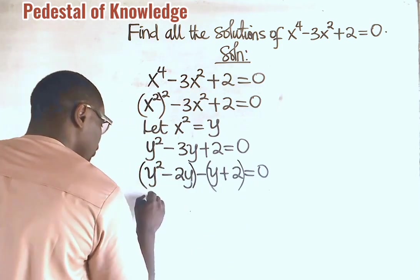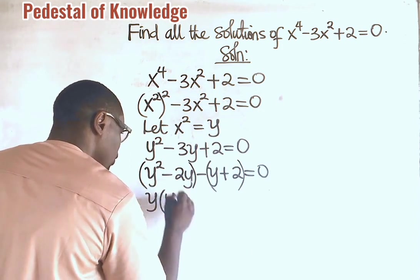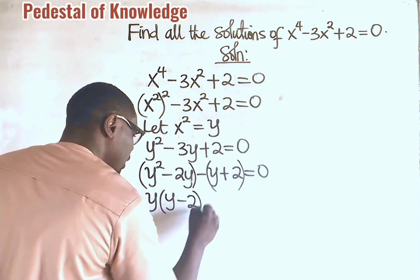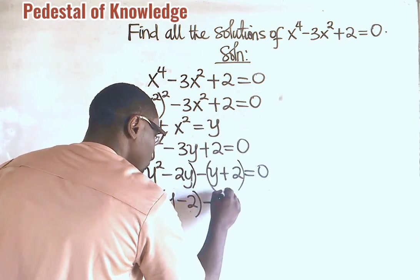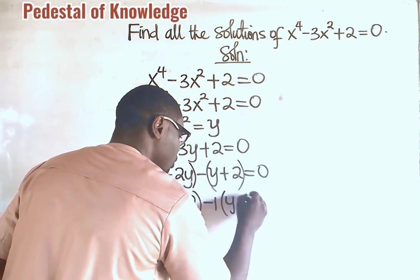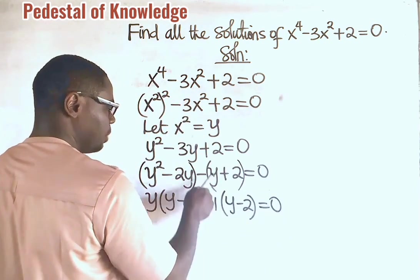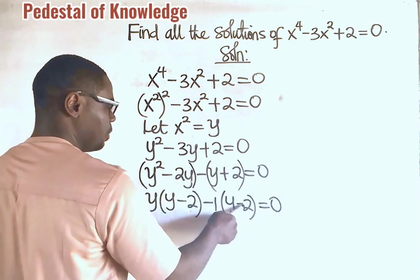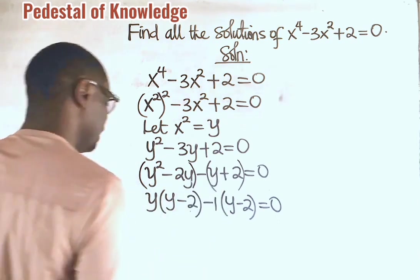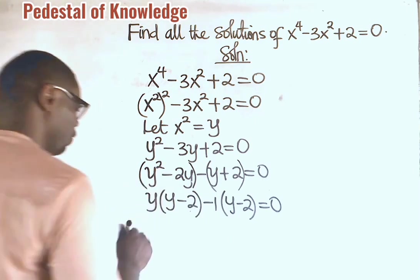Because y is common here, you factor it out. We have y into what remains here is y minus what remains here is 2. Now we have minus 1 into what we have here now is y minus 2 is equal to 0. Because minus 1 times y is minus y and minus 1 times minus 2 gives us plus 2.